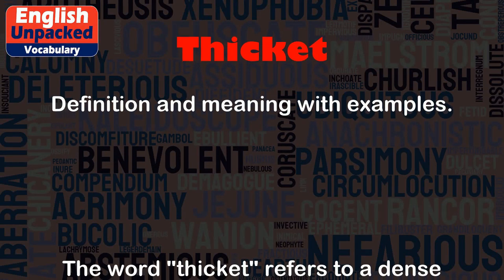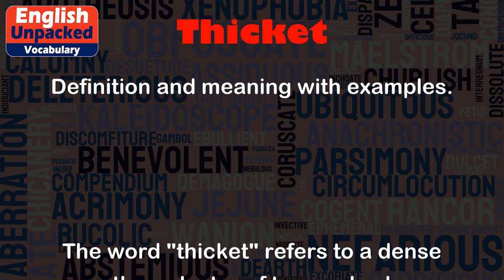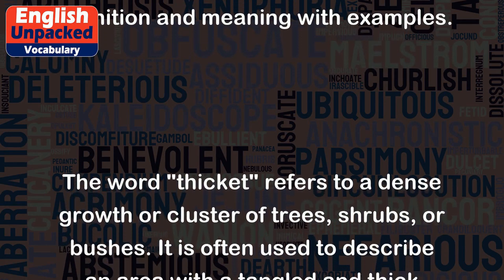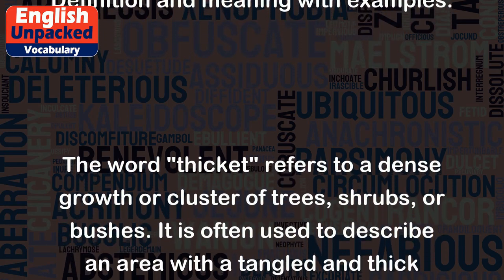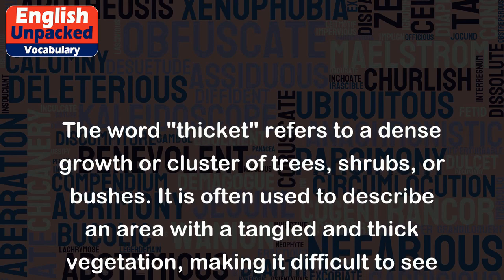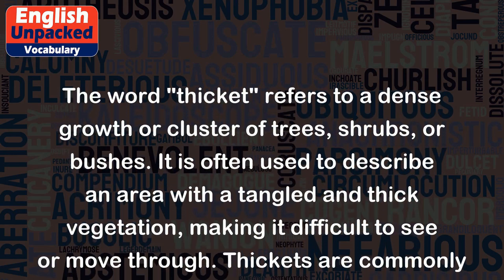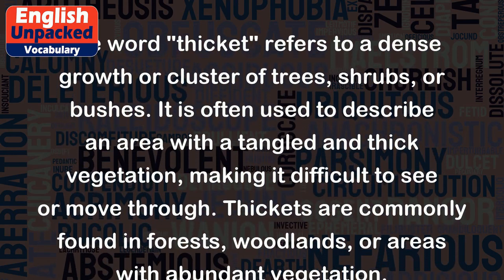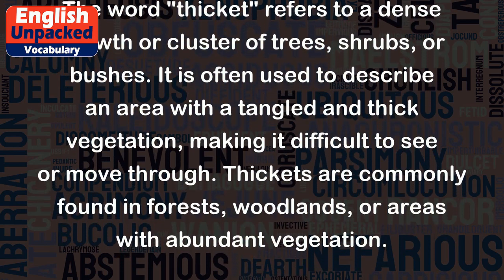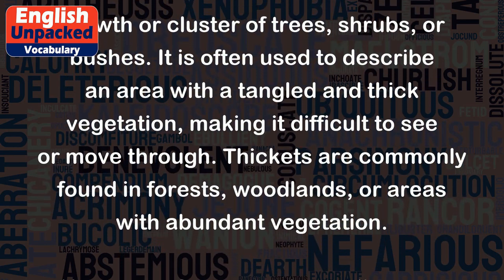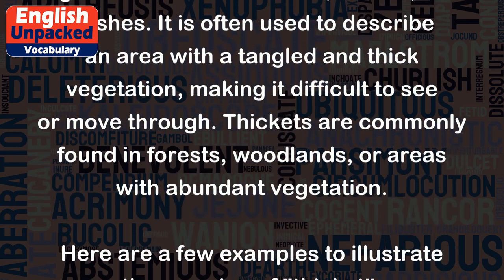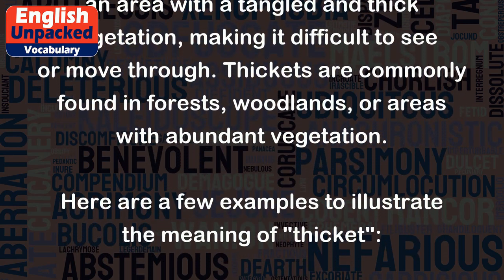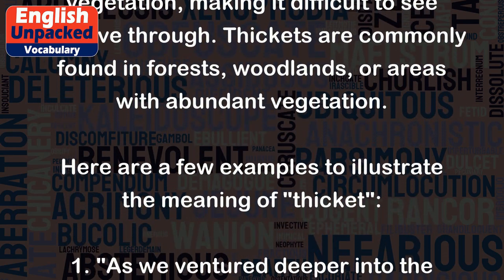Thicket. The word thicket refers to a dense growth or cluster of trees, shrubs, or bushes. It is often used to describe an area with tangled and thick vegetation, making it difficult to see or move through. Thickets are commonly found in forests, woodlands, or areas with abundant vegetation.